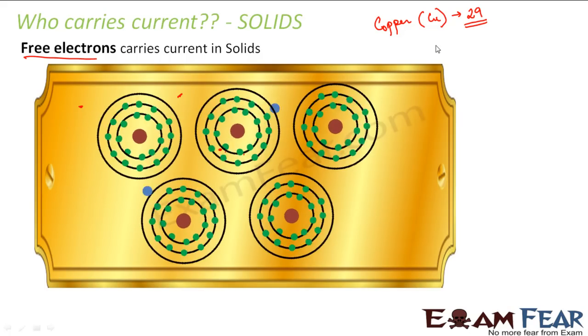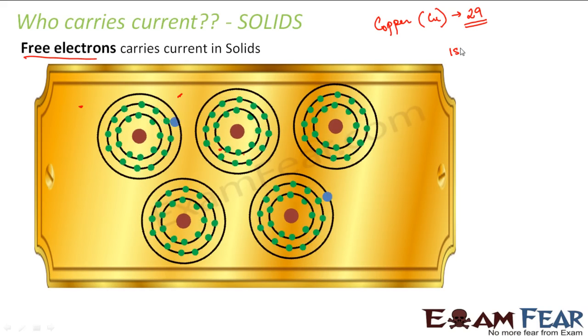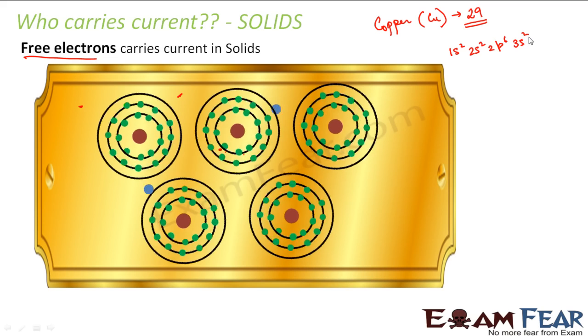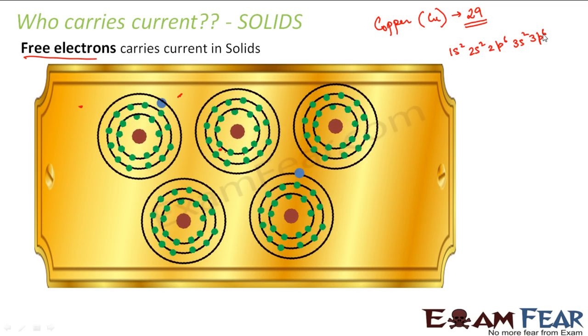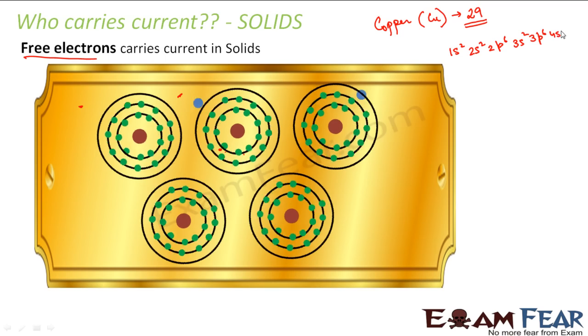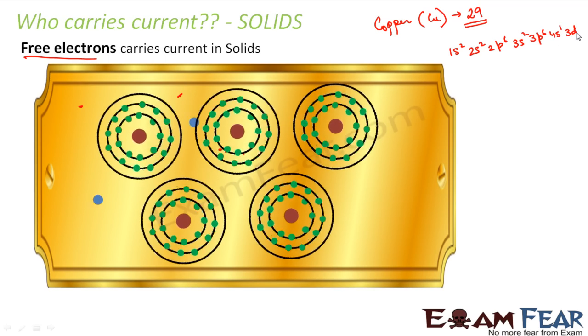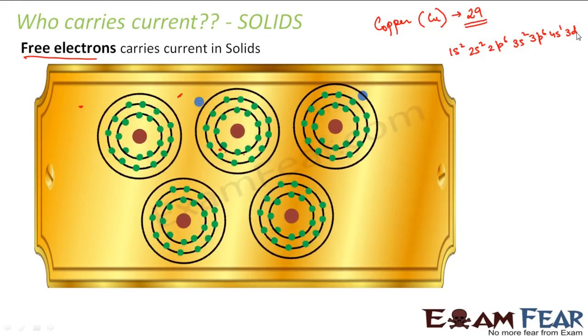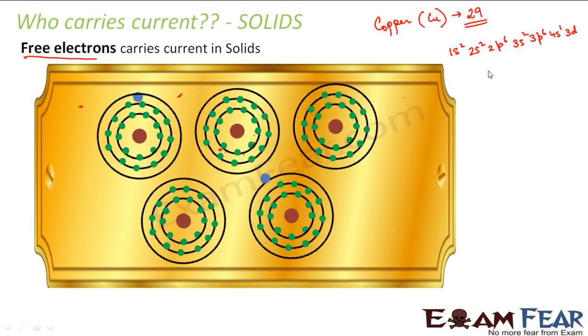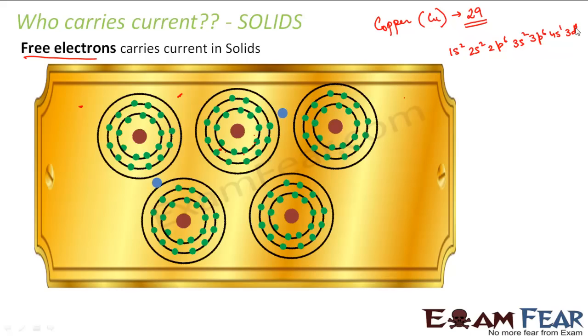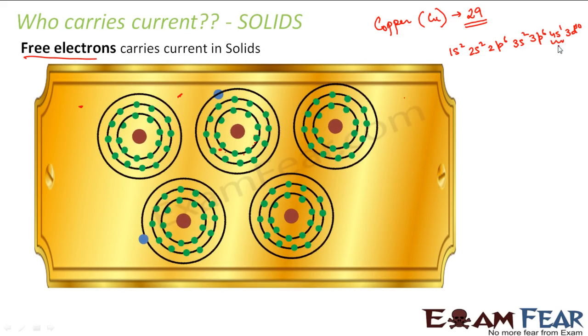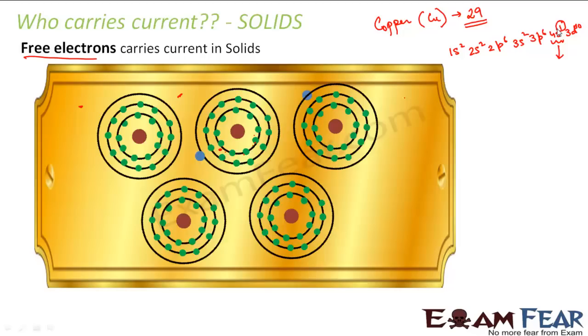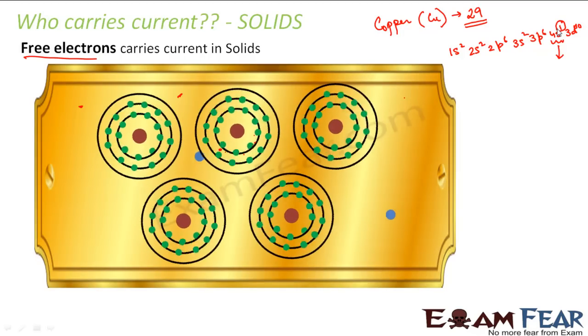If you want I can write down the electronic configuration as well. So the electronic configuration for copper looks somewhat like this: 1s2, 2s2, 2p6, 3s2, 3p6, 4s1, and 3d10. Right, so that means the outermost shell is 4s - so this is the outermost shell with only one electron. So I am sure that you all know how to write this electronic configuration, and even if you do not know please refer to your chemistry textbooks.